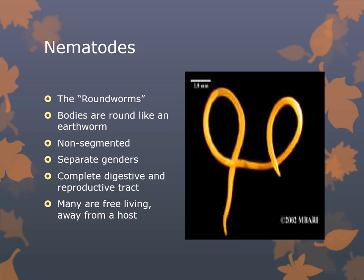The nematodes are also referred to as the roundworms. The bodies are round like an earthworm and they are not segmented. They do have separate genders — the smaller one usually has a hooked tail, and that's the male; the larger worm is usually the female with no hooked tail, especially true with Ascaris. They have a complete digestive tract and reproductive tract. Human roundworm pathogens are always dependent on a human as their definitive host, which is the host that harbors the sexual stage in development.